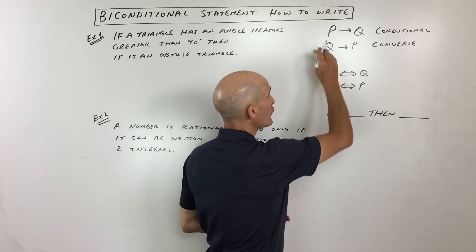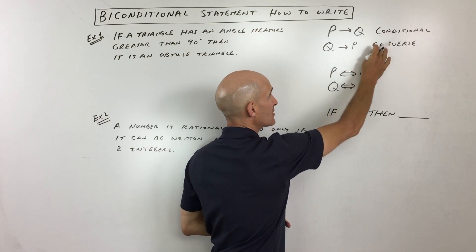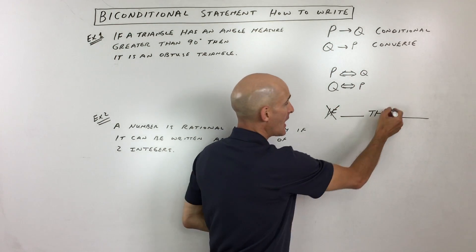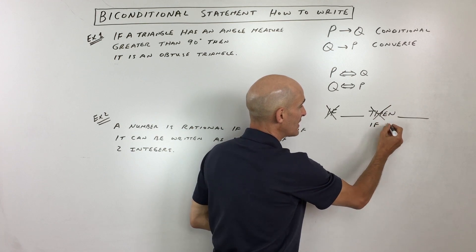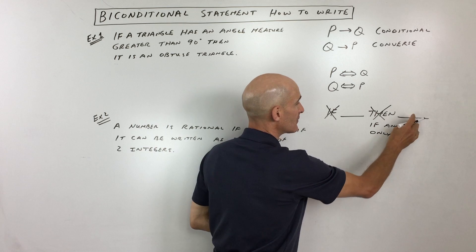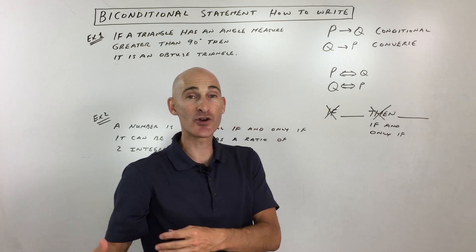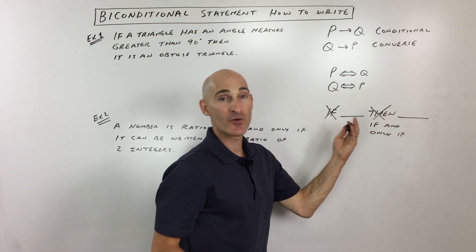What you do is, if it's true forwards and reverse, meaning the conditional and converse are both true, you drop the if, and you replace the then with this phrase, if and only if. And so what that does is, it tells the reader, meaning you and me, that it's true forwards and in reverse.